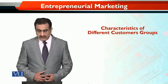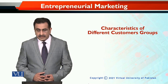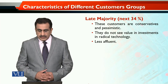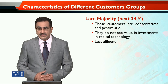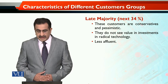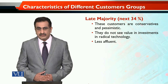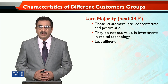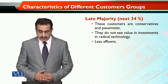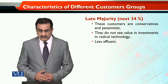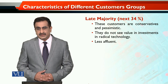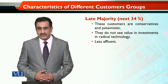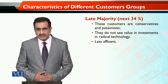Continuing the discussion on characteristics of different customer groups, the next group is the late majority. Late majority represents the next 34% of prospective customers. These customers are conservative and pessimistic, similar in attitude to those skeptical of new technology.